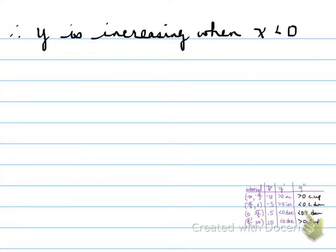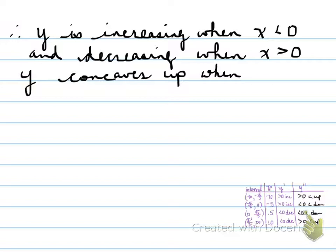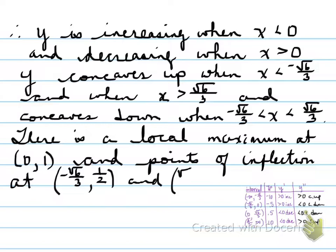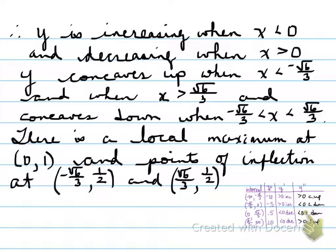So we can make the final conclusion. Based on that chart: y is increasing when x < 0 and decreasing when x > 0. y also concaves up on a certain interval and concaves down on another interval. There is a local maximum at (0, 1), and the points of inflection are as follows — all values determined from the table below. Don't forget to state the intervals properly.